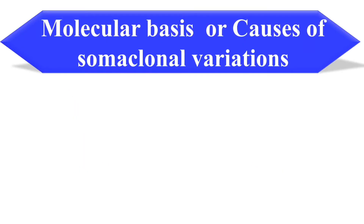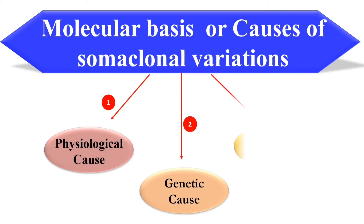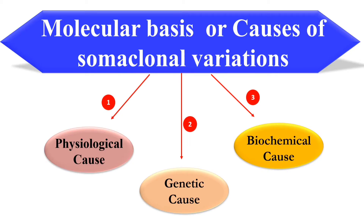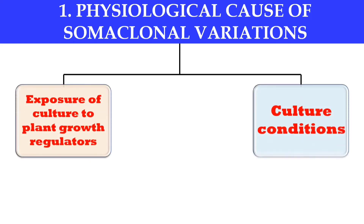What are the molecular basis or causes of somaclonal variation? Generally their causes are divided into three types: physiological cause, genetic cause, and biochemical cause. The physiological cause includes exposure of the culture to plant growth regulators, which may cause somaclonal variation during plant tissue culture. Or, due to culture conditions like fluctuations in temperature or pH, somaclonal variation may be developed.